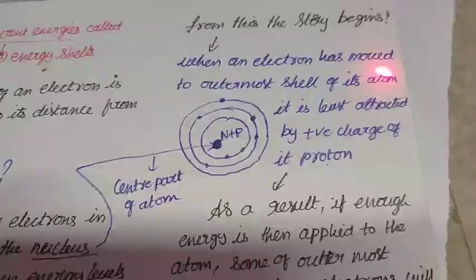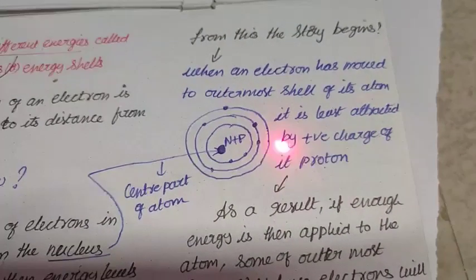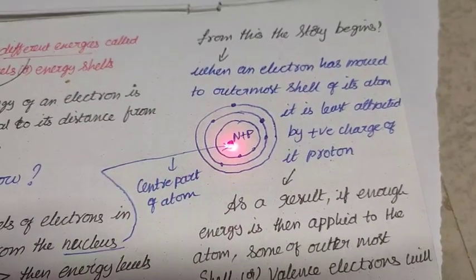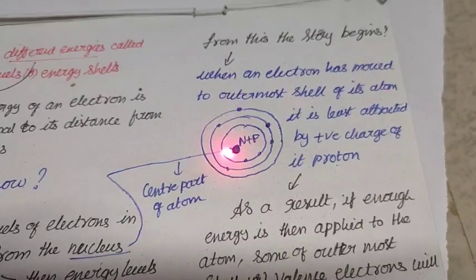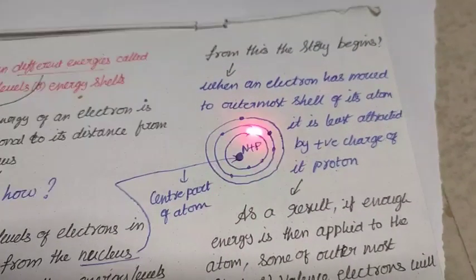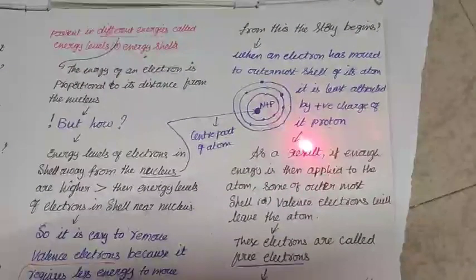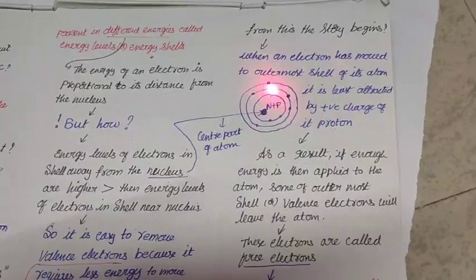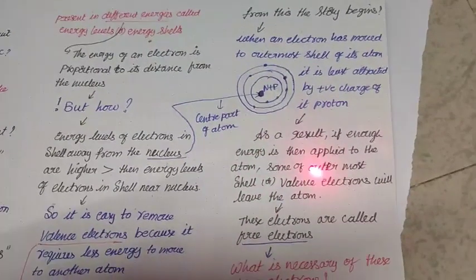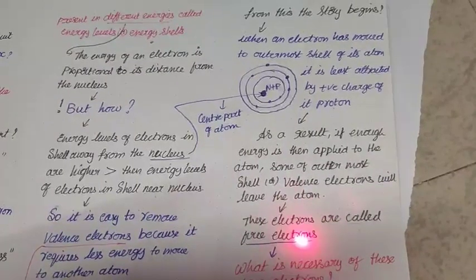So it is easy to remove valence electrons because it requires less energy to move to another atom. But have you gone through what is valence electron? Let's find out. Electrons present in outermost shell are called valence electrons. From this, the real story begins. When electron has moved to outermost shell of its atom, it is least attracted by the positive charge of its proton. Let's consider the diagram. Here in the middle it is called nucleus, the center part of the atom. In this nucleus there are neutrons plus protons.